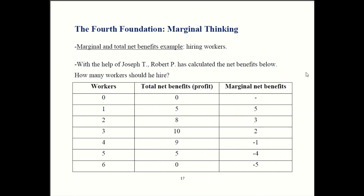Here's another illustration of marginal analysis, looking at hiring workers. In an earlier episode we had a business started by Robert, and he hired one of my star students Joseph to advise him. They do some math and work out a table for their business. If you have no workers you get no profit but also no costs, so you get zero for profit. If you have one worker you get a profit of five, and so on. The total profit is what the firm has.